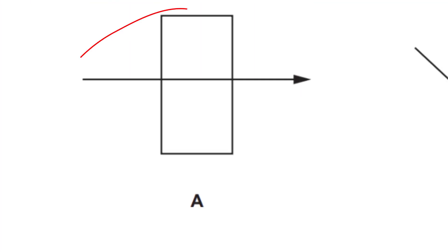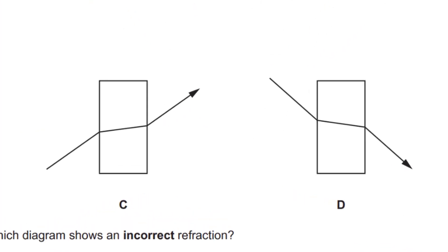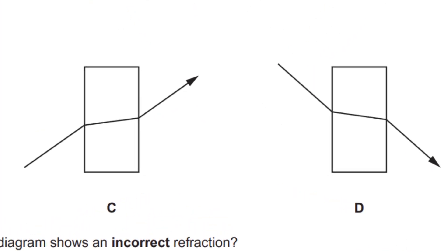Please choose an answer now. Remember that if a ray goes in perpendicular to the surface, it's going to leave the surface completely undisturbed. So A is correct. If the ray enters the glass block at an angle,